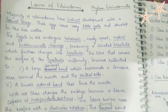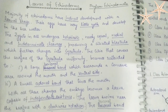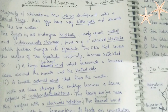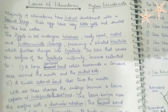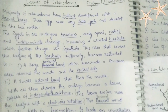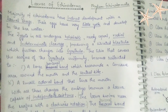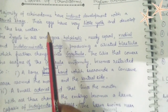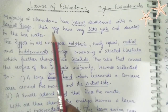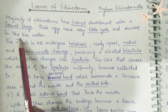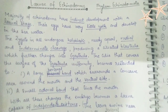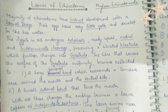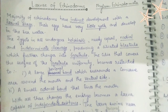The majority of echinoderms have indirect development with a larval stage. The reproduction of an adult does not take place directly — there is indirect formation, metamorphosis occurs, and larval stages form. This occurs because their eggs have very little yolk and develop in seawater, resulting in metamorphosis and indirect development with larval stages.